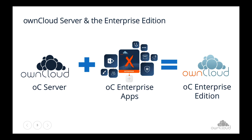So what's the difference between the ownCloud server and the enterprise edition? The ownCloud server, sometimes called the ownCloud community edition, is freely available — you can download it, install it, and use it for as many users as you want. Then there are what we refer to as ownCloud enterprise apps — things commonly used by enterprises, such as integration into Windows network drives, integration into SharePoint, or complete auditing features.